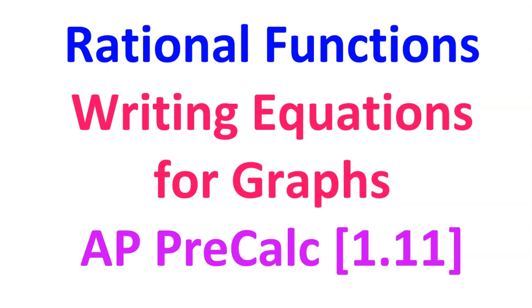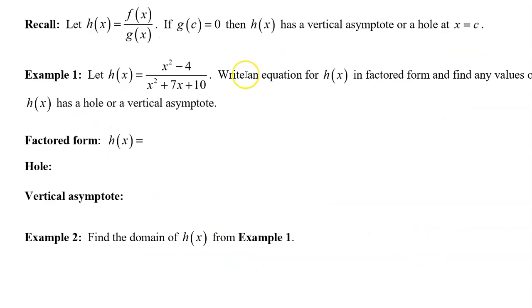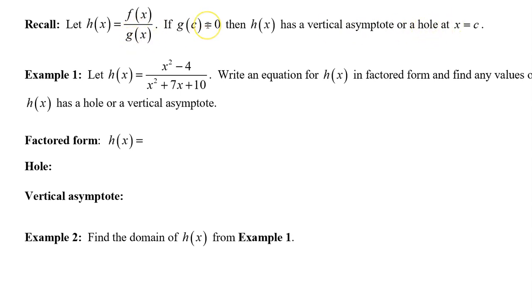If you appreciate this content, please show it by hitting that like button. Recall that a rational function will have a vertical asymptote or a hole at any value that will cause the denominator to equal zero. For example 1,